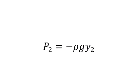this leaves us with p2 equals negative rho g y2. This gives us the equation where we can solve for depth using the pressure that is given through the transducer.